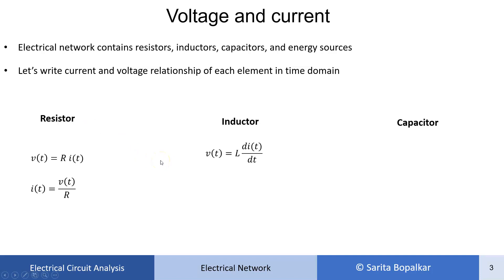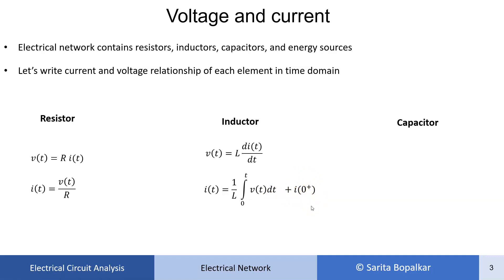For the inductor, voltage across the inductor is L·di/dt, and current is equal to 1 upon L, integration 0 to t of V(t) dt, plus I(0+). This I(0+) is nothing but the initial conditions. So before switching, if some constant current flows through the inductor, we need to consider that current also while calculating the total current through the inductor at the present instant of time.